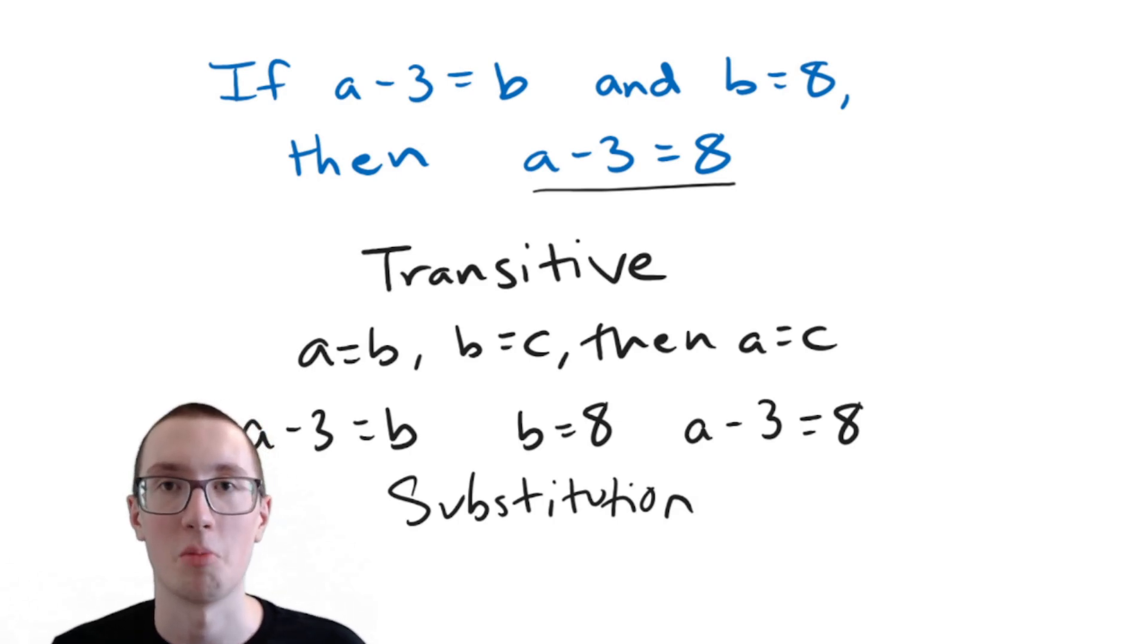your textbook probably had a problem very similar to this and it said it's the transitive property. But you might have also noticed, well hey, we have A minus three equals B, and B is equal to eight. So they just replaced B with eight.